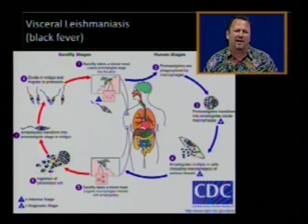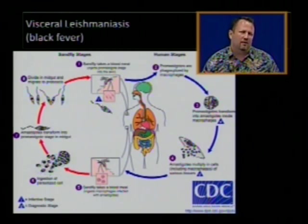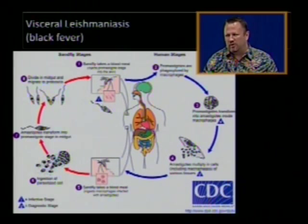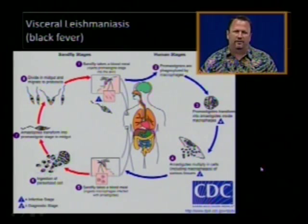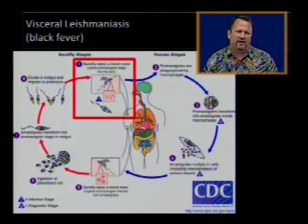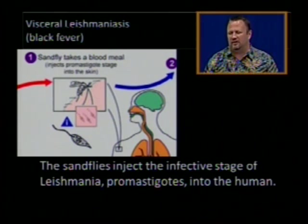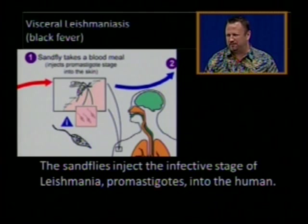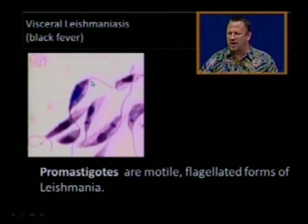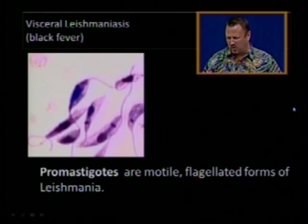If you go to the CDC website and look up anything discussed here, they'll have great information. Here is a diagram of the life cycle of the Leishmania protozoa. The sandflies inject the infective stage of the leishmania — called promastigotes — into the human. Promastigotes are motile, meaning they move, and flagellated forms of the leishmania.